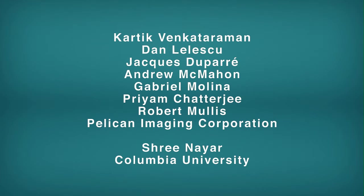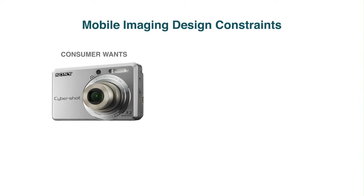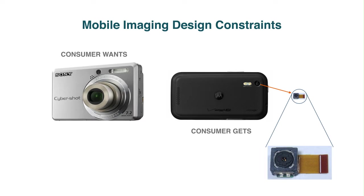The main problem in designing cameras for mobile devices is the limited space for the camera lens. With a larger lens, as in the digital still camera on the left, higher resolution and quality can be achieved. In today's thin phones and mobile devices, there is little space for a large lens with many optical elements. The camera's quality must be compromised in order to deliver a thin industrial design.